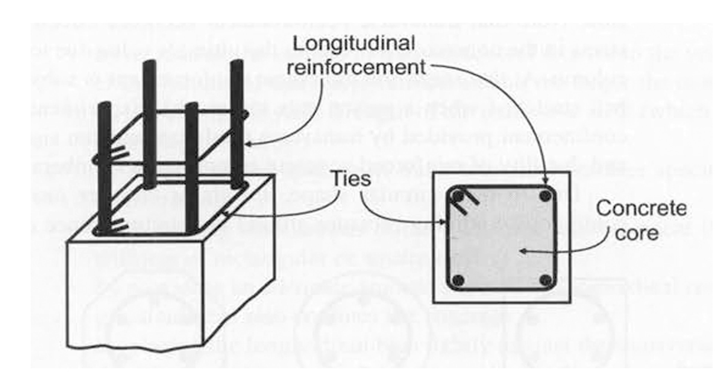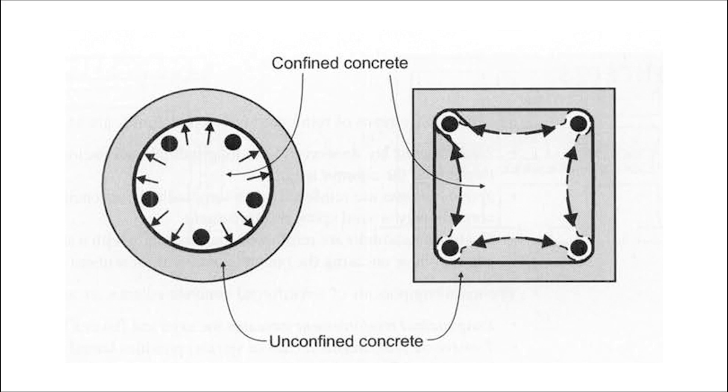So if you take a look at the screen, the graphic there, the core is the portion of the concrete column that is contained by the stirrup. So it's confined by the ties.